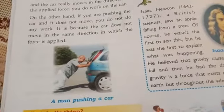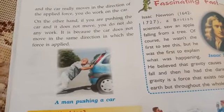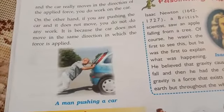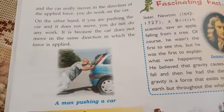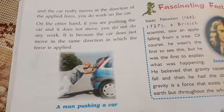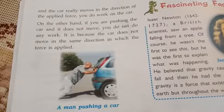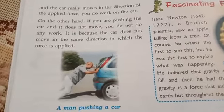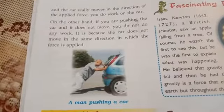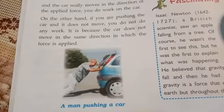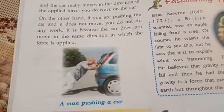Force is also applied to change the direction of a moving object — the best example being a batsman hitting the ball. Force is also applied on soft objects to change their shape. And friction is that force which stops a moving thing.